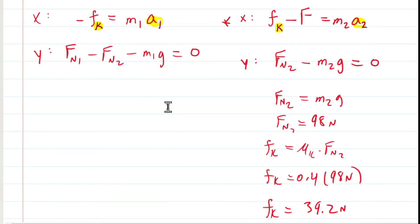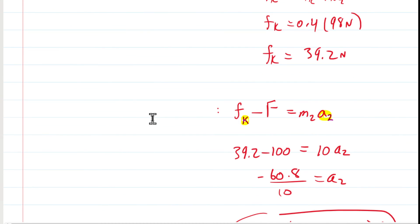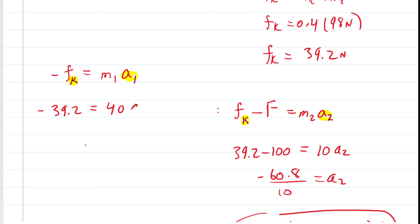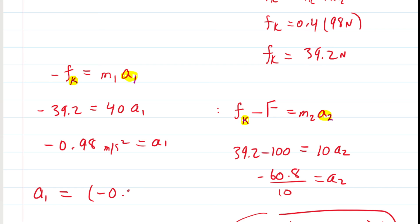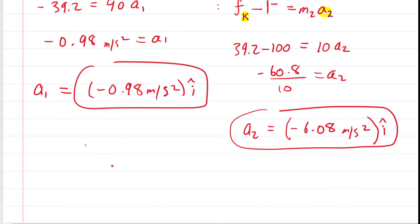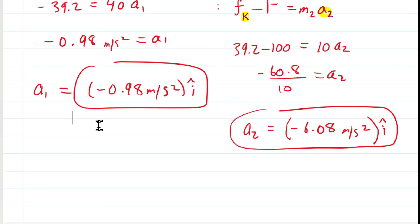We can now get the acceleration of block 1 by returning to the X direction equation for block 1. Plugging in F sub K equals 39.2 newtons and M1 equals 40 kilograms, we divide to get approximately negative 0.98 meters per second squared. In unit vector notation, the acceleration of the slab is negative 0.98 meters per second squared in the i-hat direction. Notice the blocks are not accelerating in unison — it was not appropriate to assume static friction and that they move as one body, though we had to check that assumption. It turned out to be incorrect, so we pivoted to kinetic friction instead.